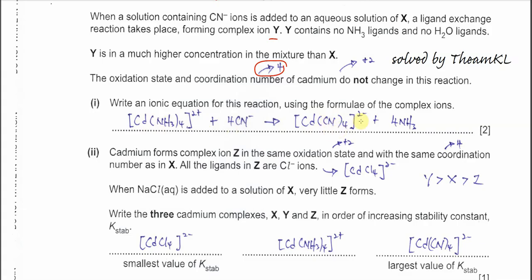The charge is important: cadmium is 2+ and four cyanide ions contribute 4−, so the overall charge of complex Y is 2−. The four ammonia molecules that were in the previous complex ion X are released as products of the substitution reaction.